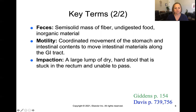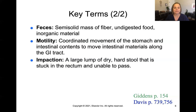A few more key terms: feces is the semi-solid mass of fiber, undigested food, and inorganic material that passes through our digestive tract and becomes stool in the intestinal tract. Motility is the coordinated movements of the stomach and intestinal tract to move materials along the GI tract. Impaction is a large, hard lump of stool that is dry and stuck in the rectum and unable to pass.